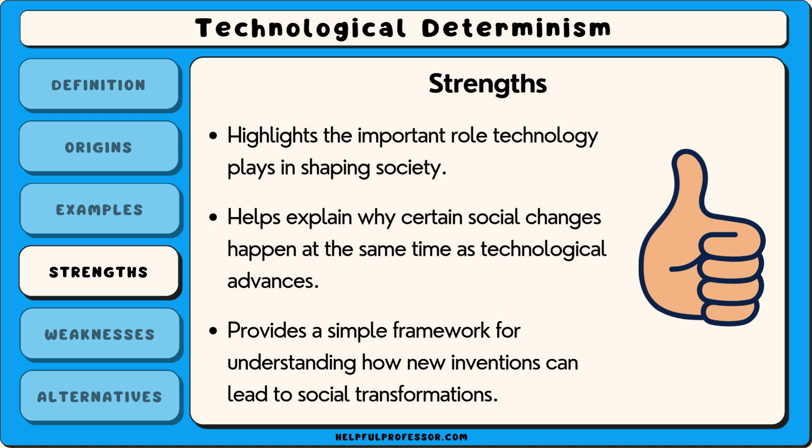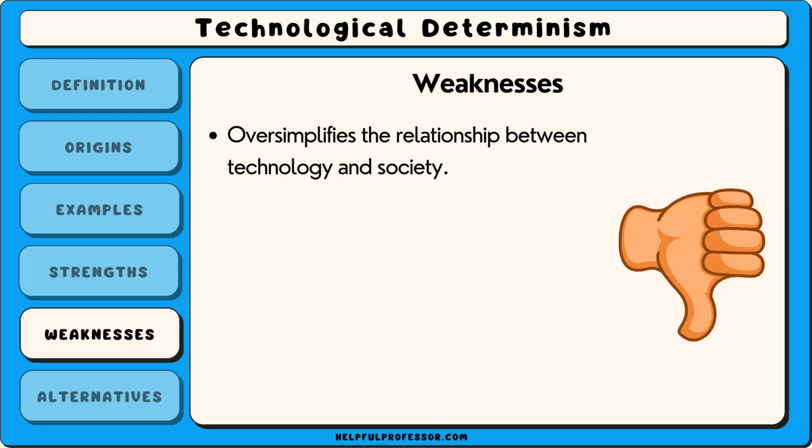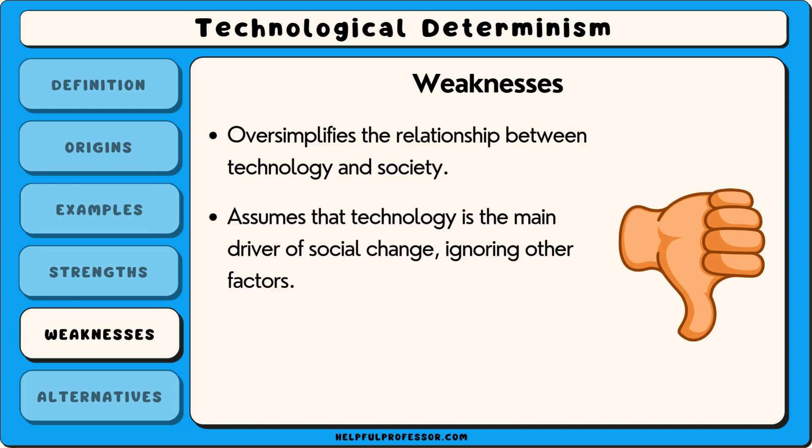However, a key weakness of technological determinism is that it often oversimplifies the relationship between technology and society. It assumes that technology is the main driver of social change,